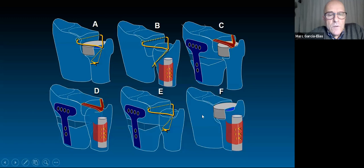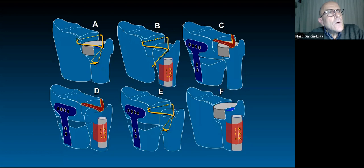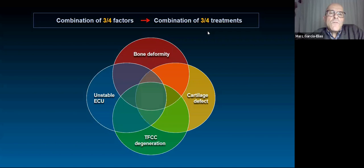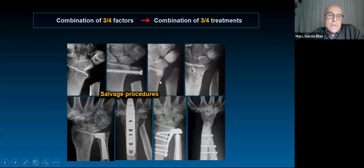Is treating all problems simultaneously always possible? It is wishful thinking most of the time. But I must assure you that with a holistic approach, if you appreciate two or more possible problems, you should at least try to address them together. When a combination of three or four factors is present, you must combine three or four treatments. In highly complex cases, however, a salvage procedure is the answer.